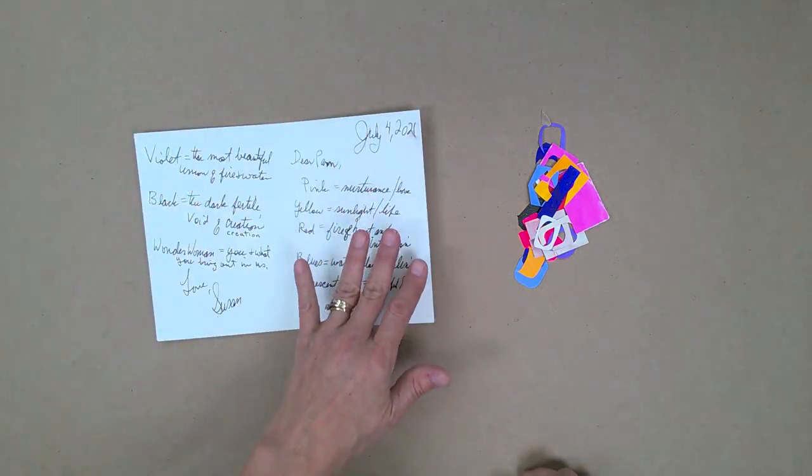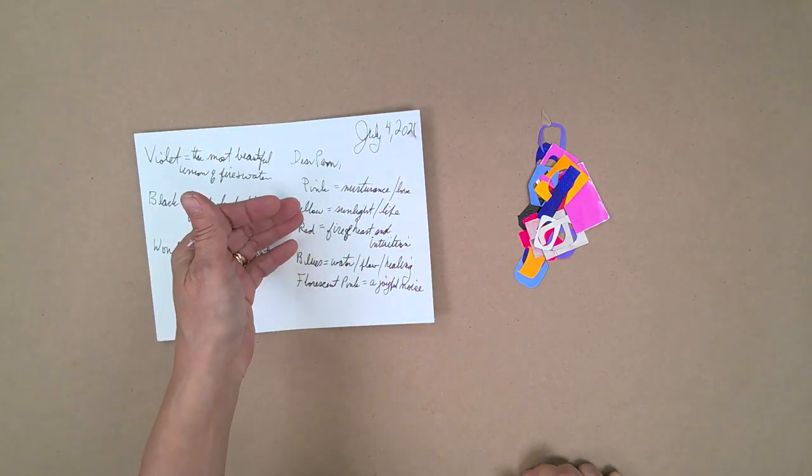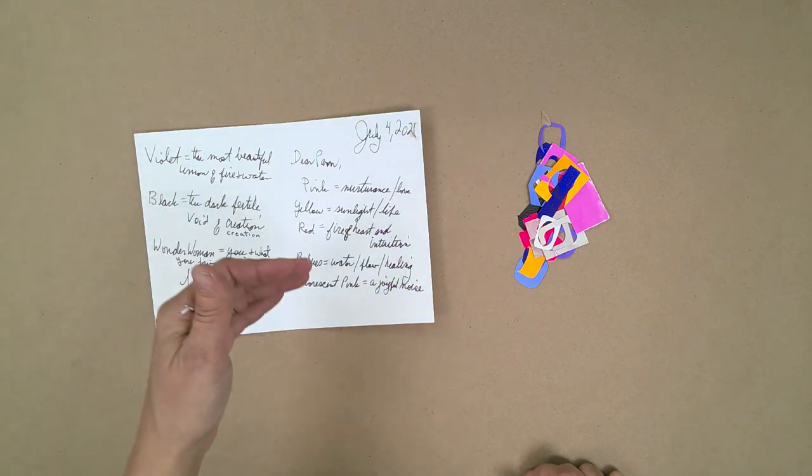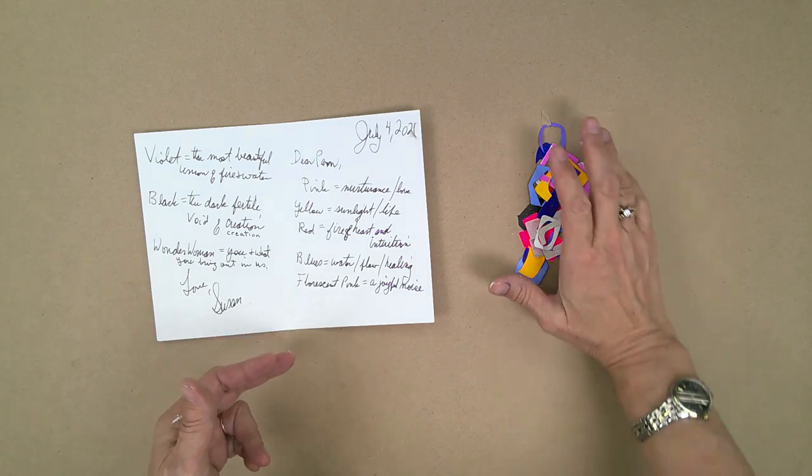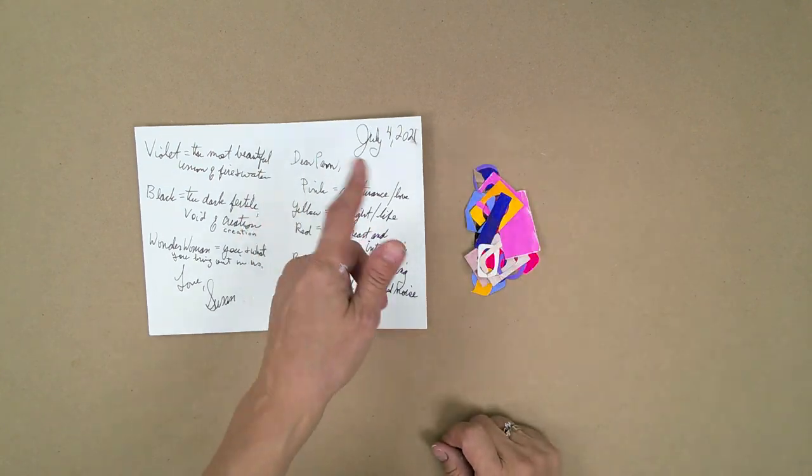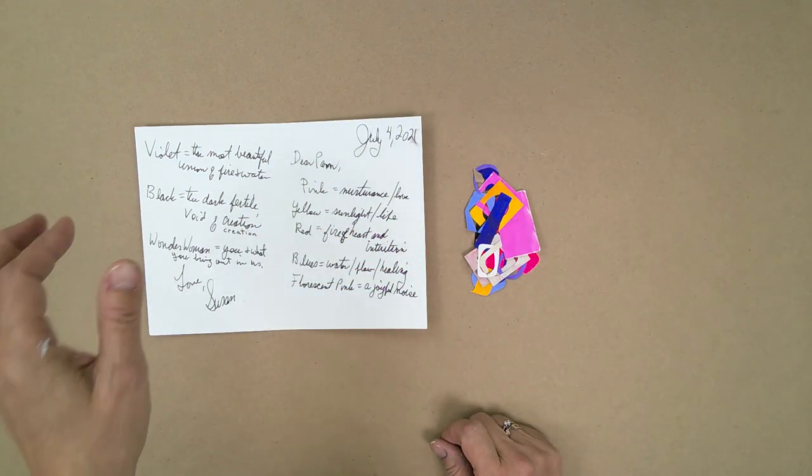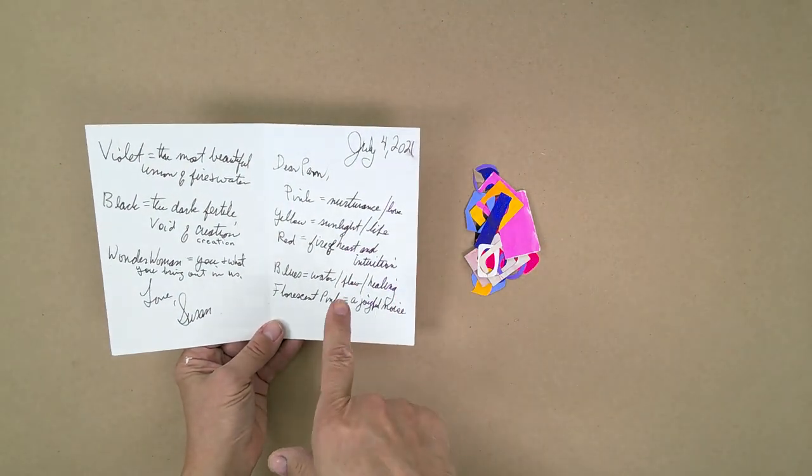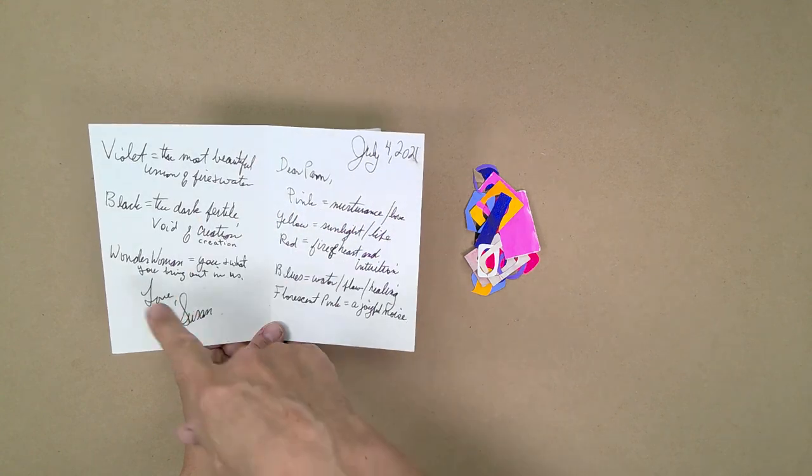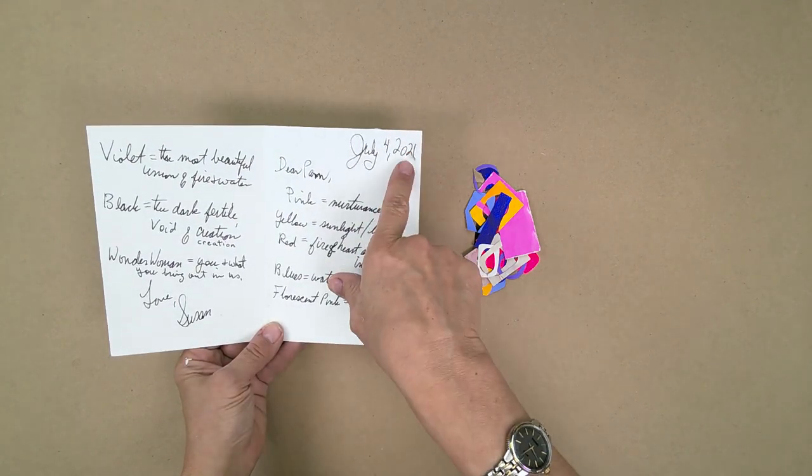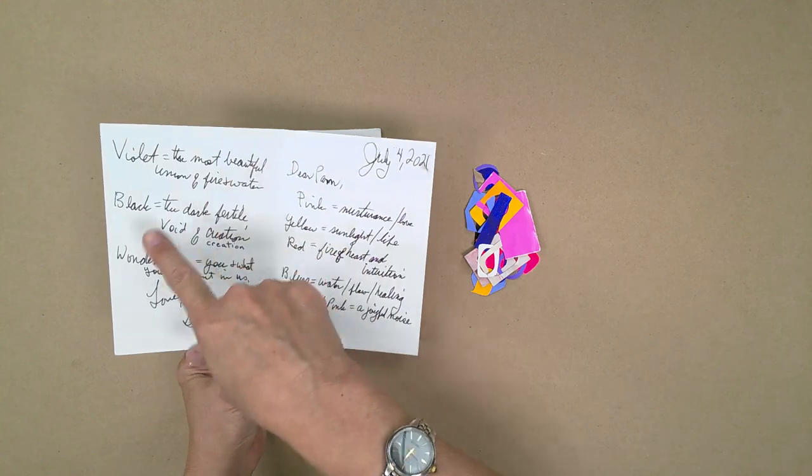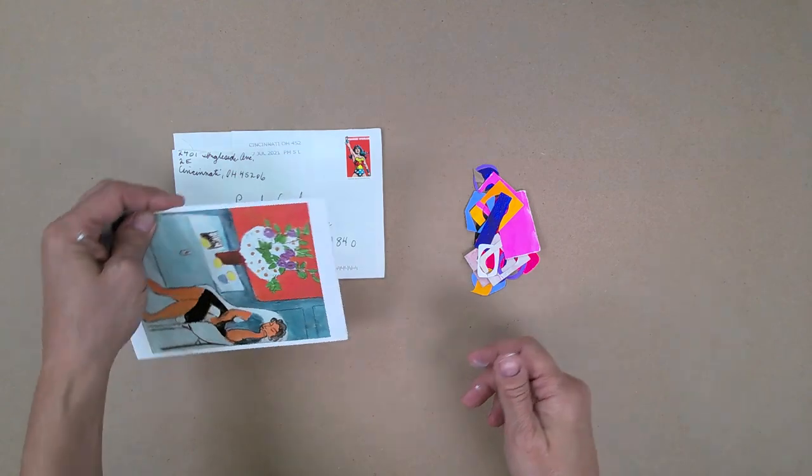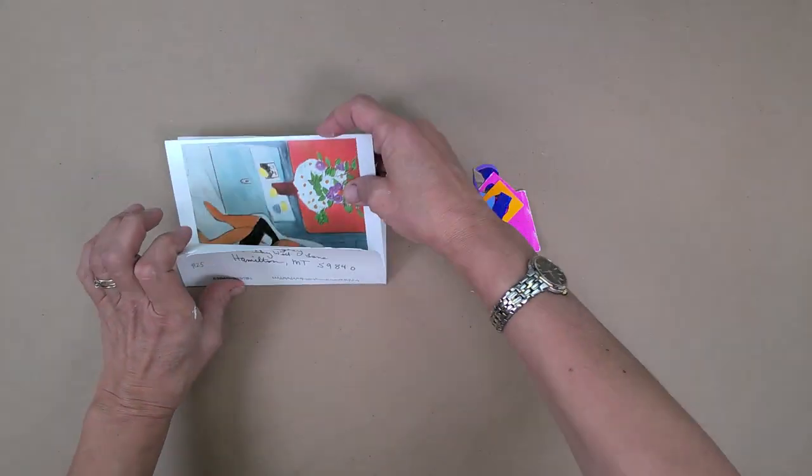Now here she kind of described all the colors - pink is for nurturance and love, yellow is for sunlight and life, red is for fire of heart and intuition. So all the colors that she included in her envelope, she described what they mean to her. That was very cool and I actually was going to incorporate some of her handwriting in there. The ink kind of bled. So I made a photocopy of it and I shrank it down and I tried to kind of make some of this work. But in the end, you'll see what happened. You can't always include everything.